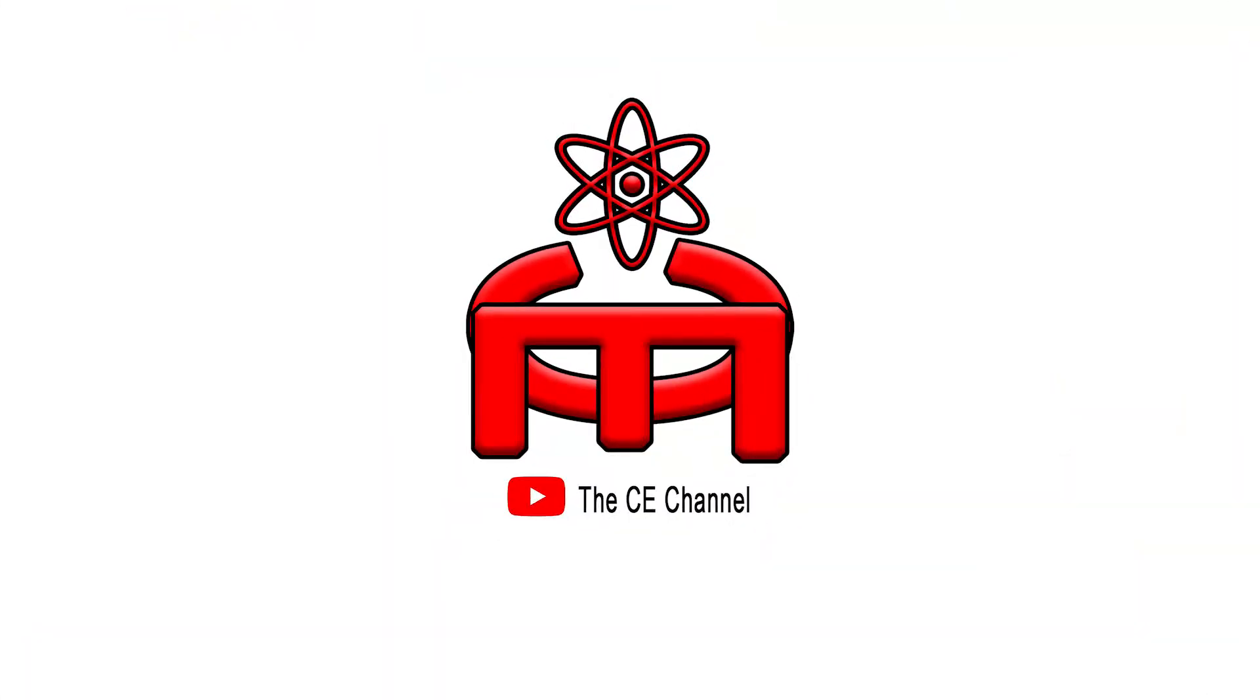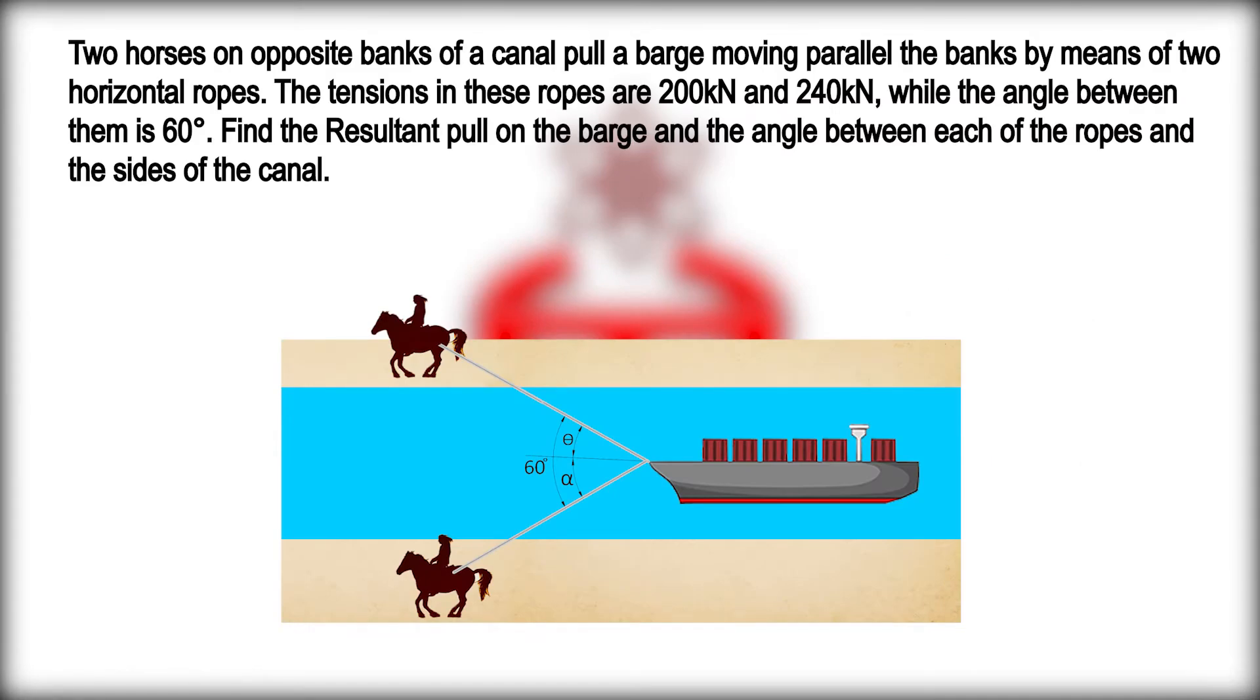Hello guys, for today's video let us solve the problem shown. Two horses on opposite banks of a canal pull a barge moving parallel to the banks by means of two horizontal ropes. The tensions in these ropes are 200 kilonewtons and 240 kilonewtons.